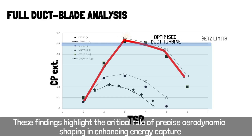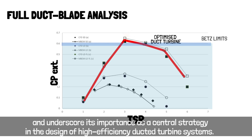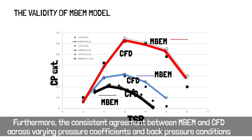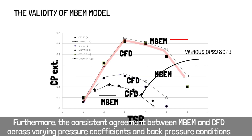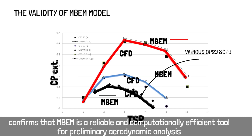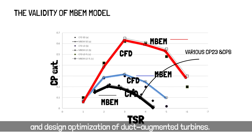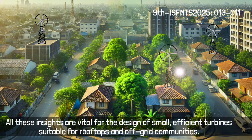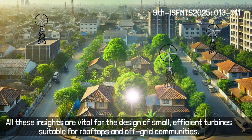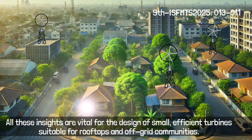These findings highlight the critical role of precise aerodynamic shaping in enhancing energy capture, and underscore its importance as a central strategy in the design of high-efficiency ducted turbine systems. Furthermore, the consistent agreement between MBM and CFD across varying pressure and back pressure conditions confirms that MBM is a reliable and computationally efficient tool for preliminary aerodynamic analysis and design optimization of duct-augmented turbines. All of these insights are vital for the design of small, efficient turbines suitable for rooftops and off-grid communities.